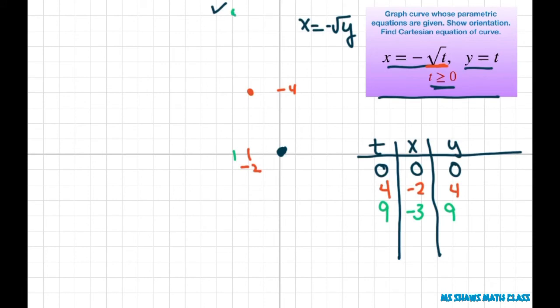So this is your curve. We're starting at zero, zero. And there's no terminal point. And your orientation is this way. So that's what you want to show the orientation.